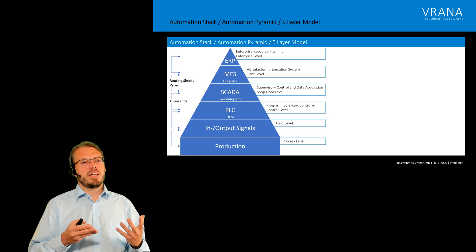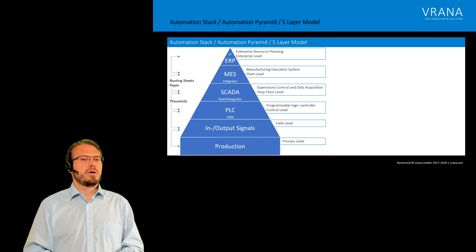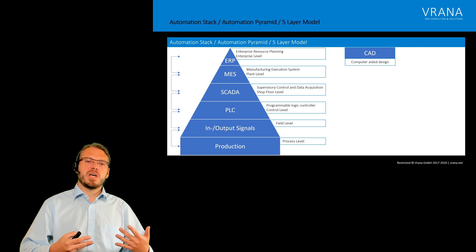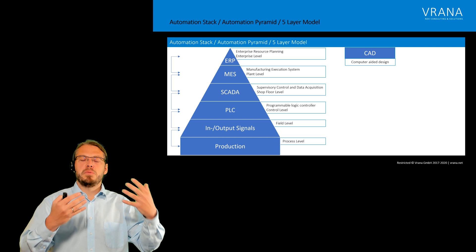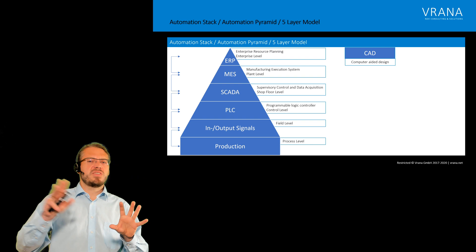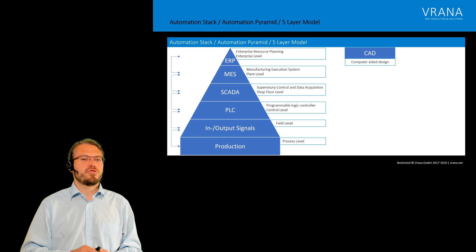If we think one step ahead of the automation stack, we look into industry more broadly — this is only production. We do not start with producing something; we start with engineering, with computer-aided design, designing first the component we want to produce. There is a weak link between ERP, MES, and the computer-aided design system, and we need that data to actually make sense of the data coming from our control level and shop floor level.